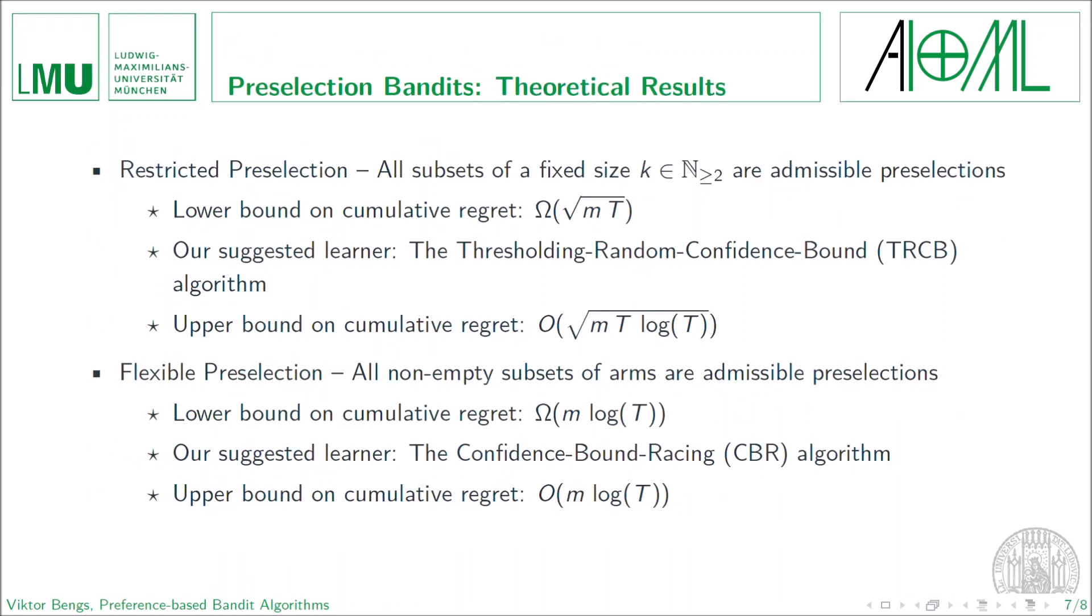And just to give you a brief overview of our theoretical findings, we have considered the learning problem just introduced in two variants. One where the preselection size is fixed throughout the learning process, and in the other, the preselection size can be determined by the learner in each time step. For both settings, we have shown lower bounds on the cumulative regret for any learner in the respective setting, and we provide for each setting a learning algorithm which is almost optimal regarding its bound on the cumulative regret respectively.